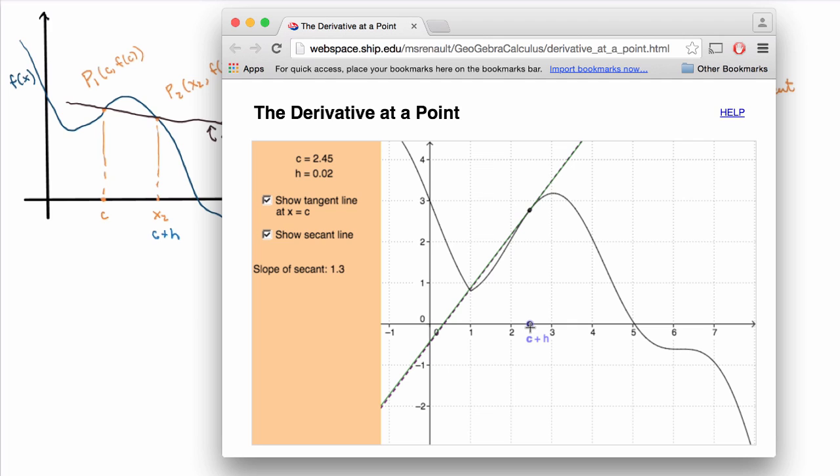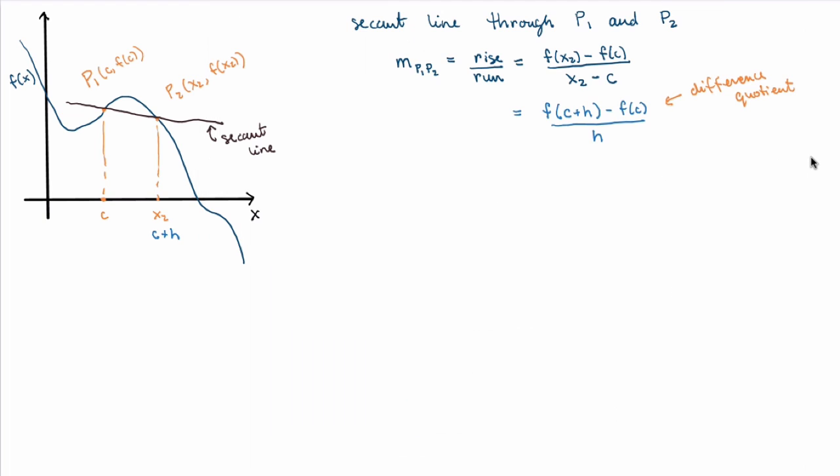So this is one way of defining the tangent line. You take the secant line and you bring, but you bring the second point as close as possible to the first one. All right, so let's try to write this down mathematically.